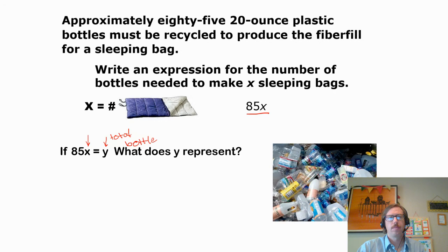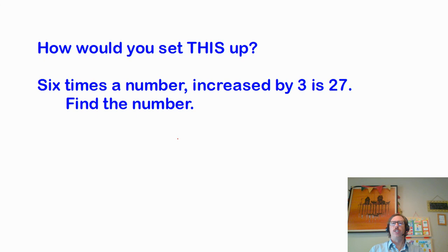How would you set this up? So here's your chance to try it out. Six times the number increased by 3 is 27. Find the number. We don't need to solve right now. I just want to get practice setting this up. Here, I would do six times the number, 6X increased by 3 plus 3 equals 27. That would be a nice two-step equation.